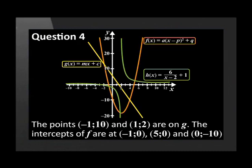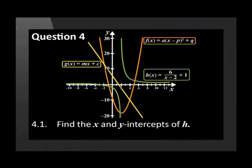The points (negative 1, 10) and (1, 2) are on g. The intercepts of f are at (negative 1, 0), (5, 0), and (0, negative 10). Find the x and y intercepts of h.